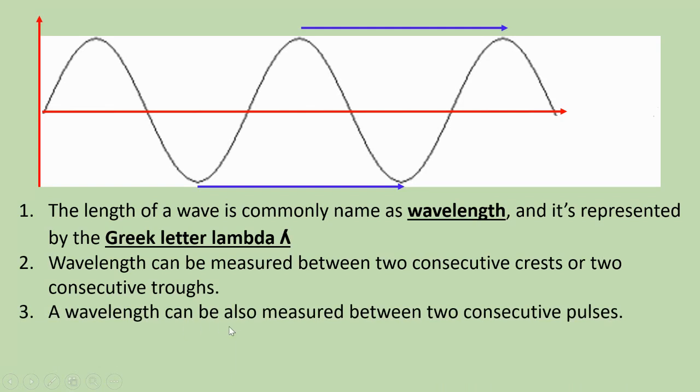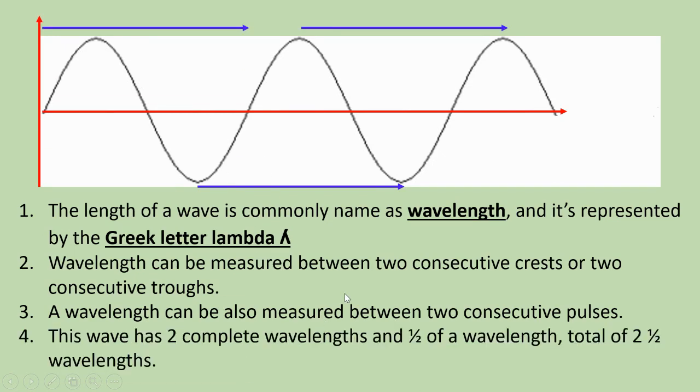The wavelength can be measured between two consecutive crests or two consecutive troughs. A wavelength can be measured between two consecutive pulses. One, two. This wave, for example, has two complete wavelengths and half of one. So we say that it is the total of two and a half wavelengths.